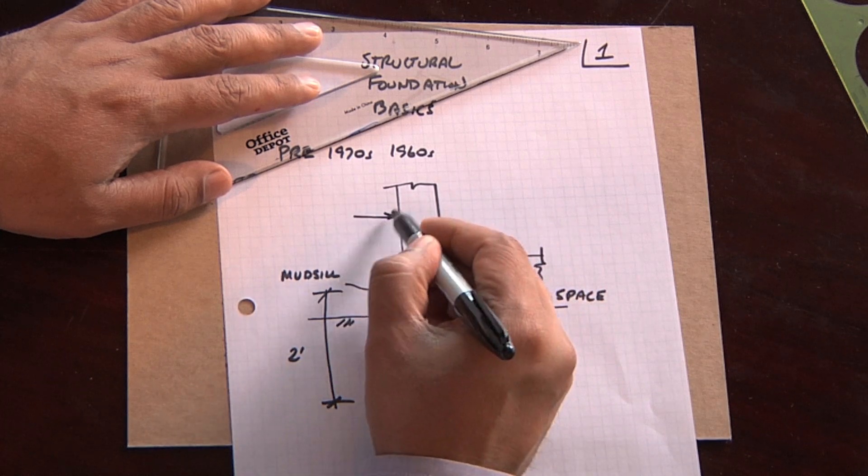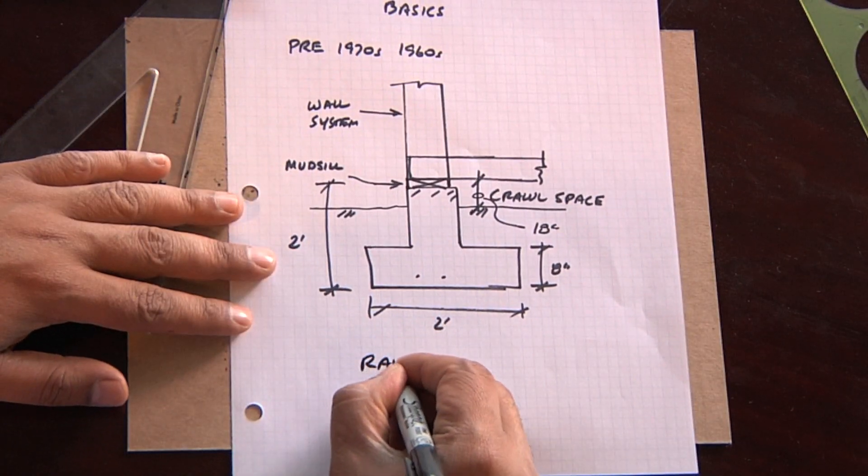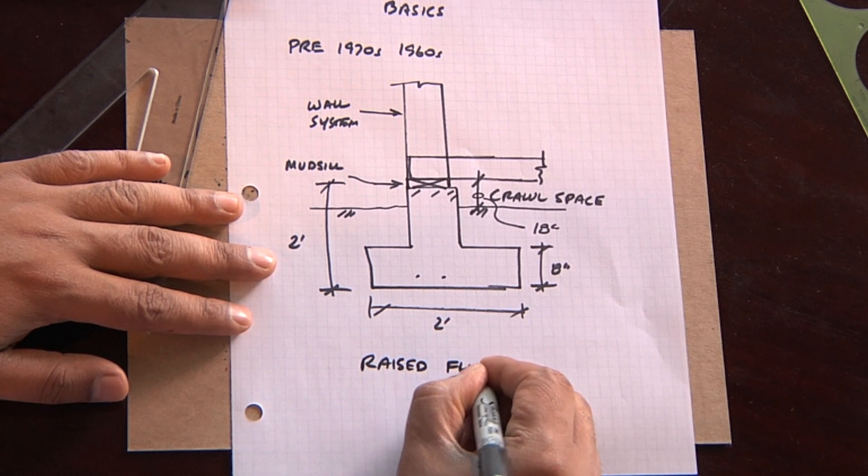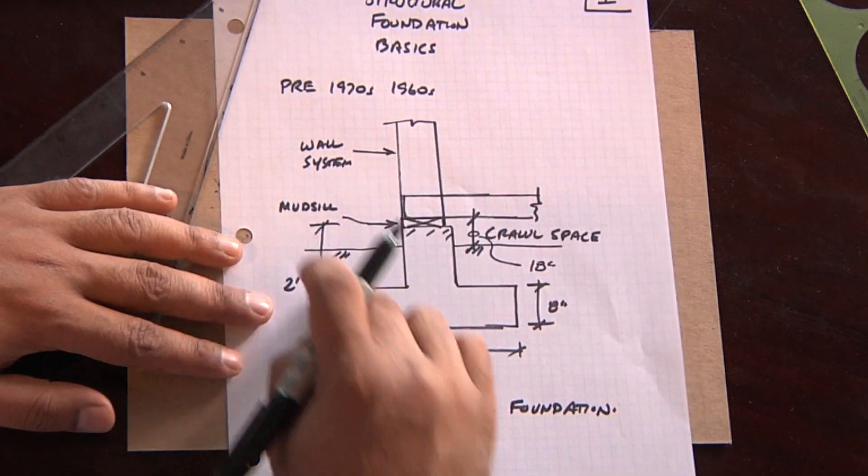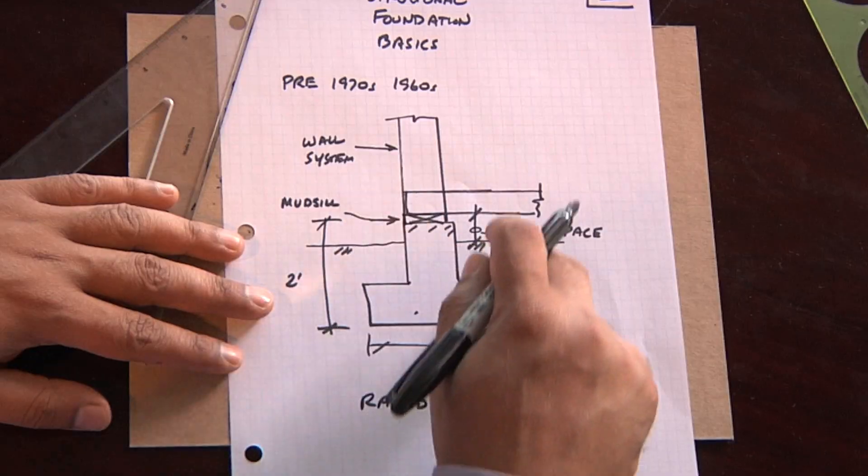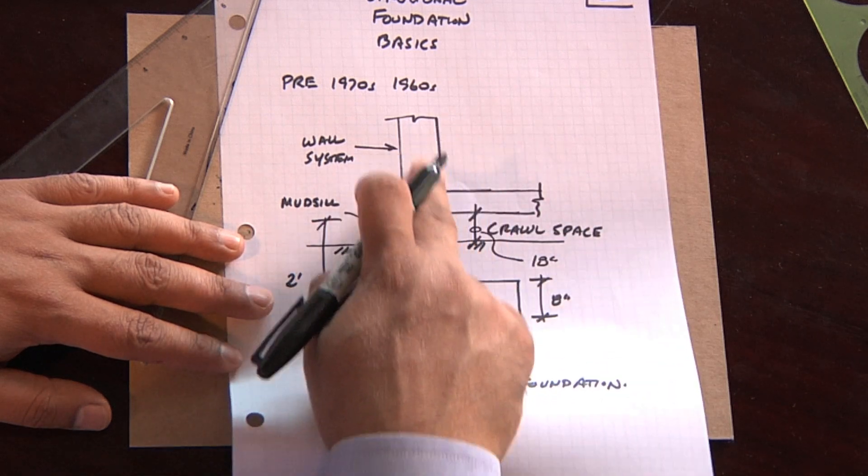This system, which is a raised floor foundation system. This system has pretty much been discontinued after 1975. You don't really see, probably even at the end of the 1960s, you don't see buildings really built like this anymore. And one of the reasons is that the cost of forming your foundation system and then putting your building up on top of it became rather cost prohibitive back in the 60s. And so the industry went in a new direction.